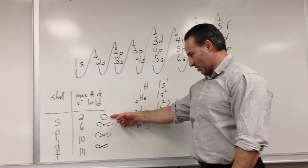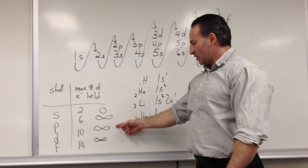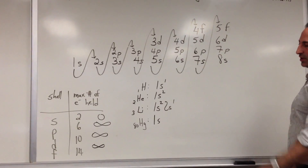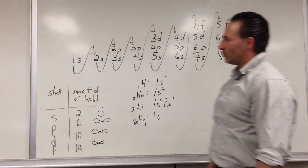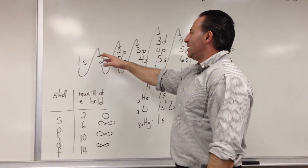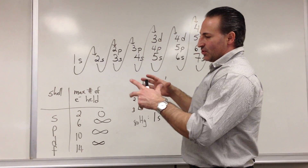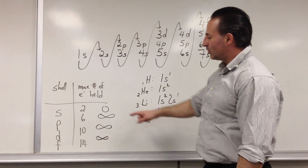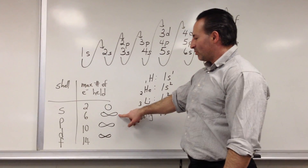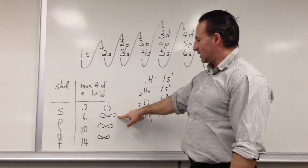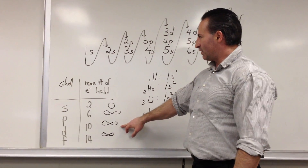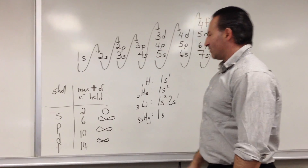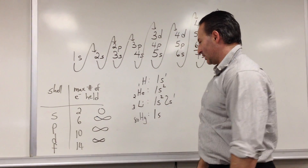S orbitals are spherical. P orbitals, D orbitals, and F orbitals tend to be lemniscate — they look like figure 8s, but oriented in different directions around the nucleus. As more and more electrons are packed around a given nucleus, they occupy higher and higher energy levels, further and further away from the nucleus. You can only have two electrons in an S orbital, a P orbital can only hold 6 electrons, D orbitals can only hold 10 electrons, and F orbitals can only hold up to 14 electrons.